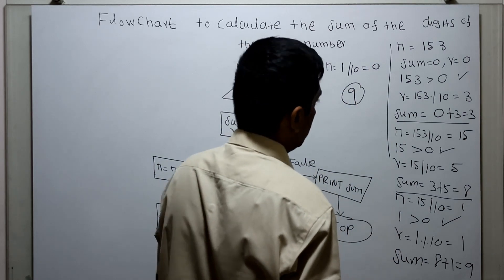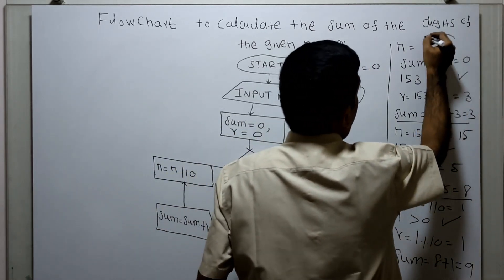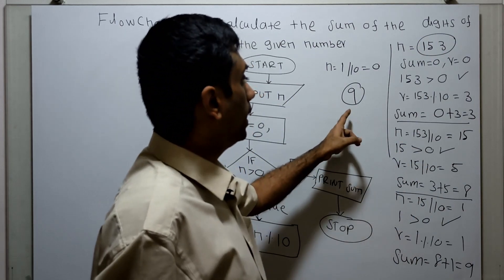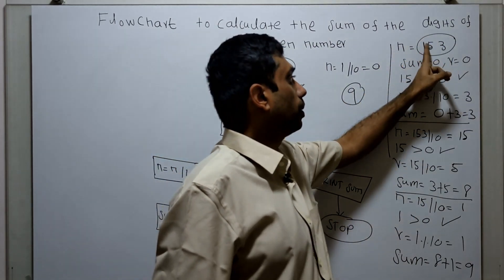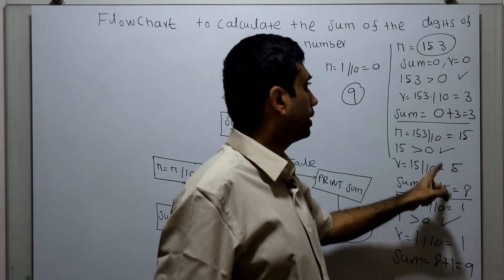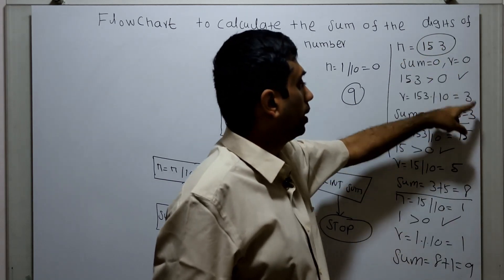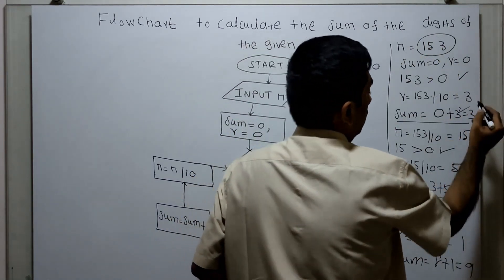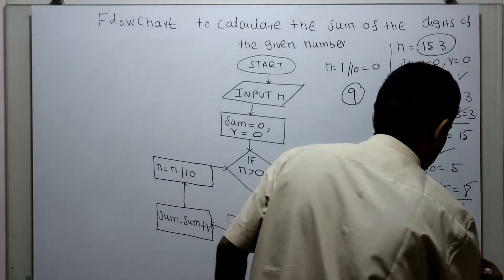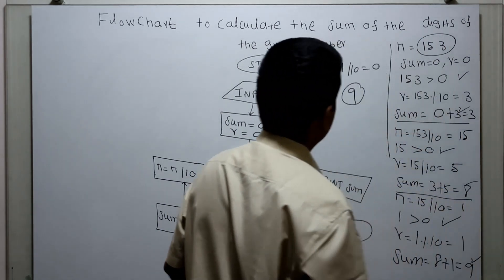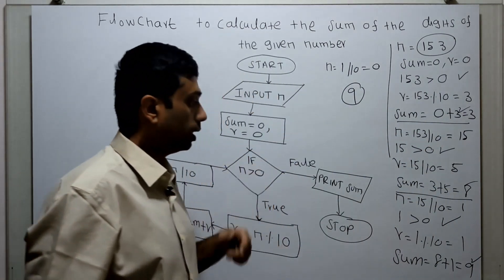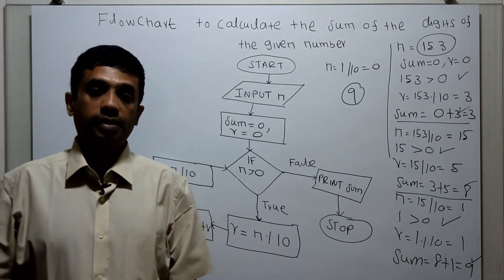Input was 153 and the output is 9. How does 9 come? 1 plus 5 plus 3: the digits were added as 3 plus 5 plus 1. 3 plus 5 is 8, 8 plus 1 equals 9. So 9 is the output, and the flowchart is working perfectly.